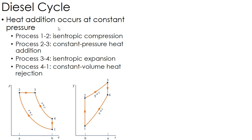All other processes are identical between the diesel and the Otto cycle, just process 2 to 3 where I have constant pressure instead of constant volume. Because of that, when I do the air standard preferred analysis, that process 2 to 3 looks a little different.